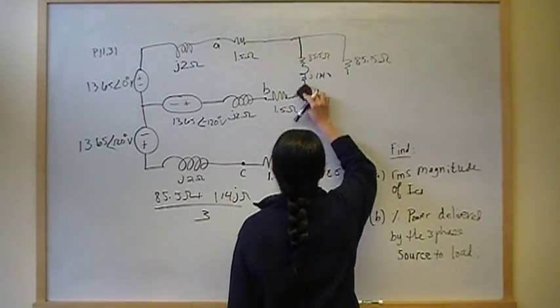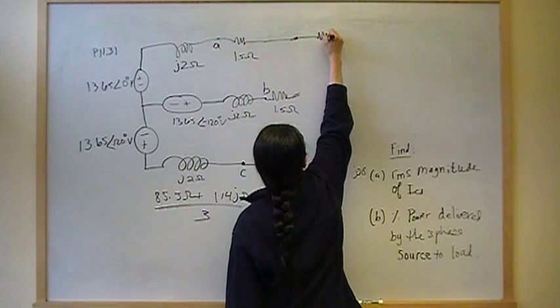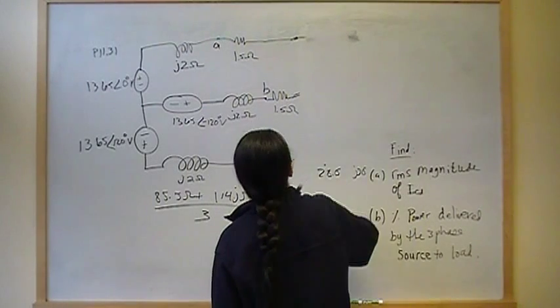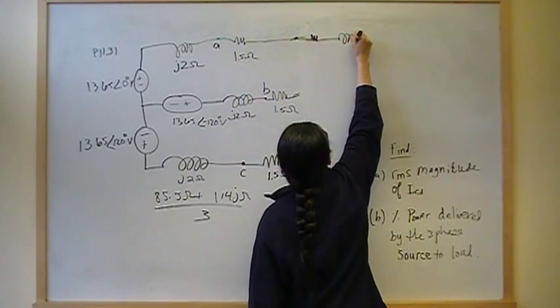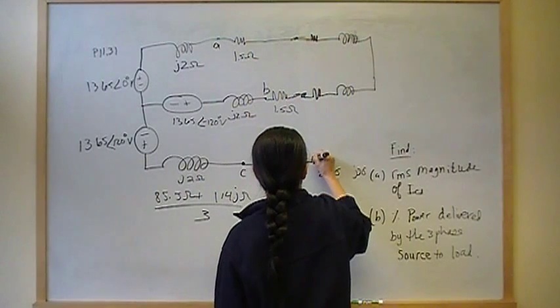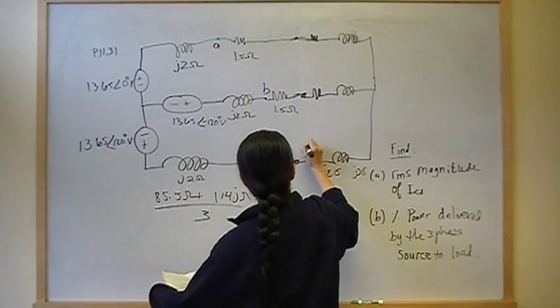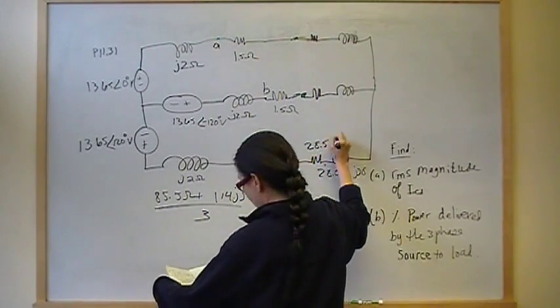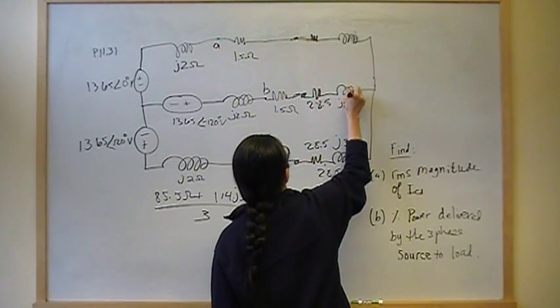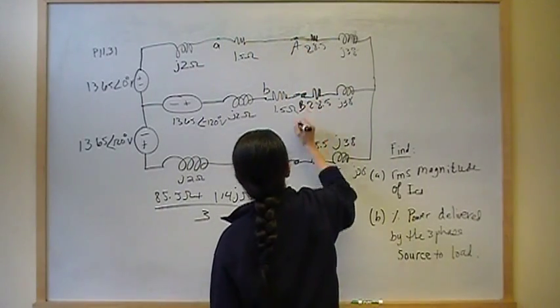So now we know that we can replace this delta connected load with its star connected equivalent. So that's going to give me 28.5 plus J38 ohms. This is A, B, C.